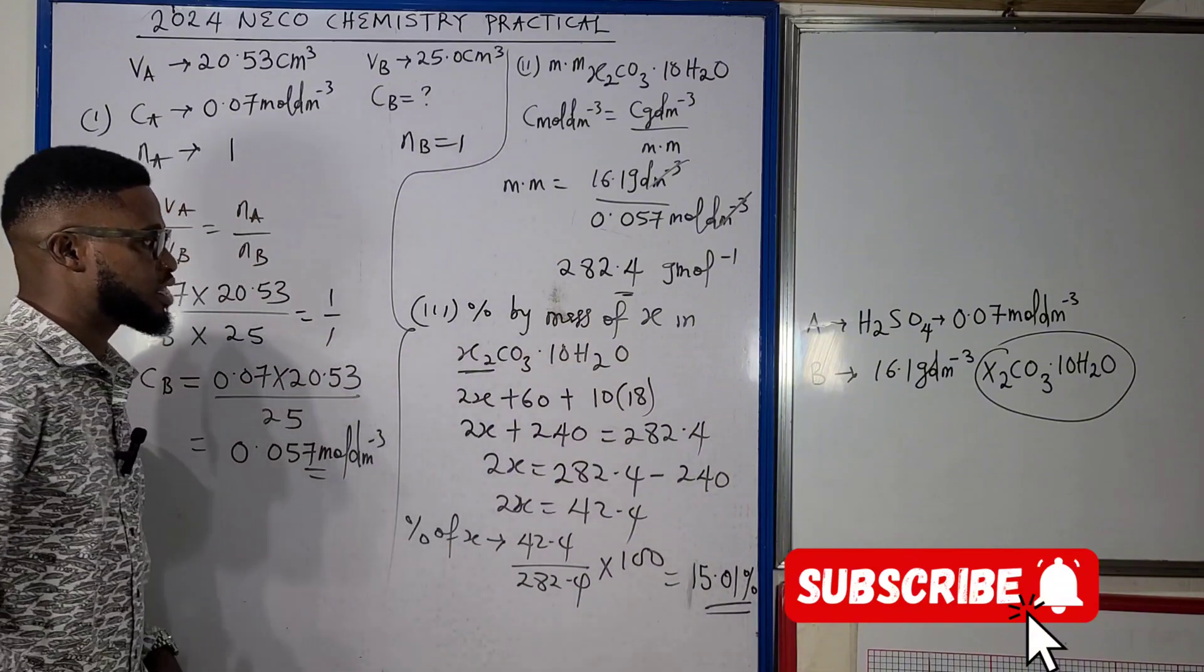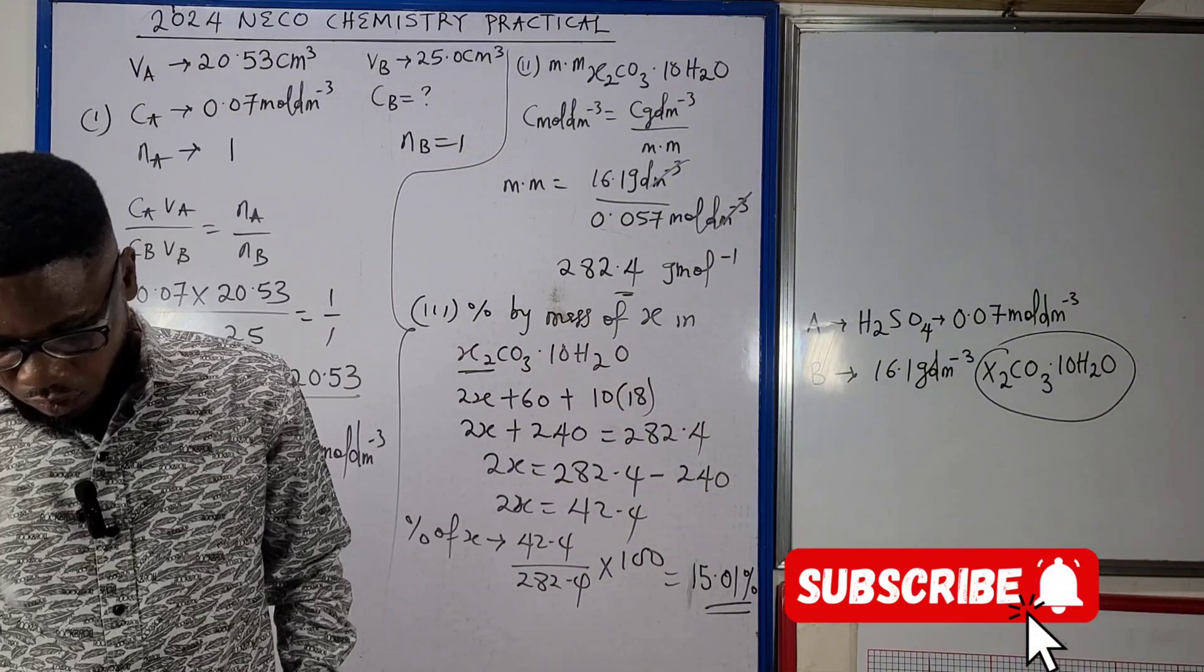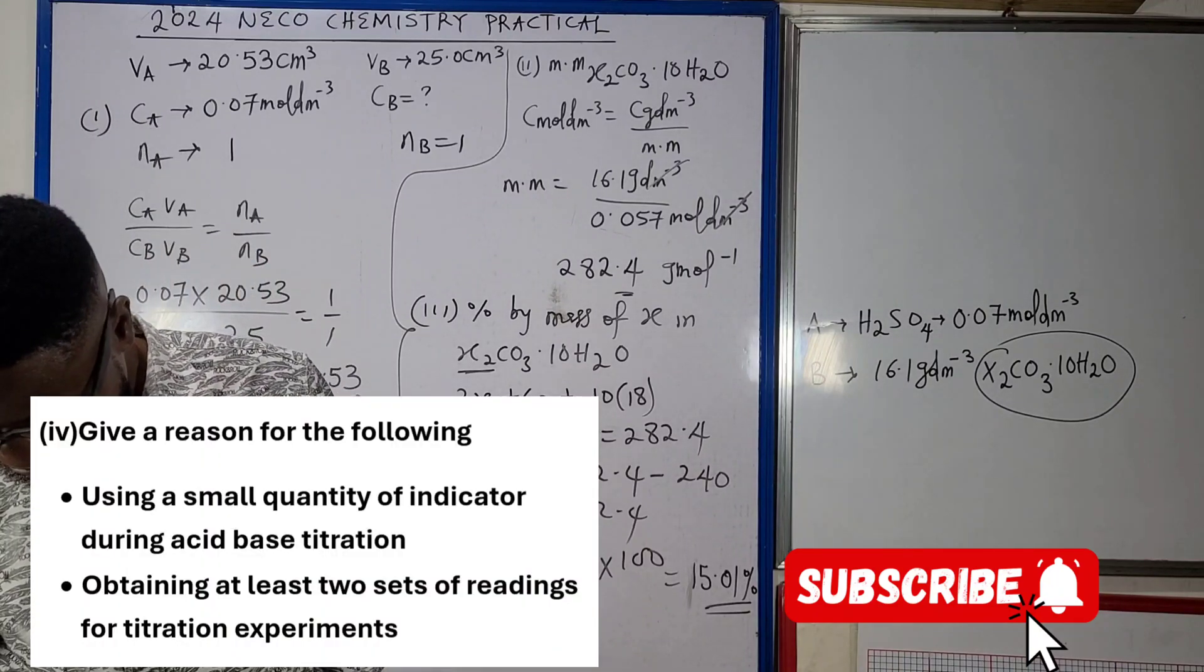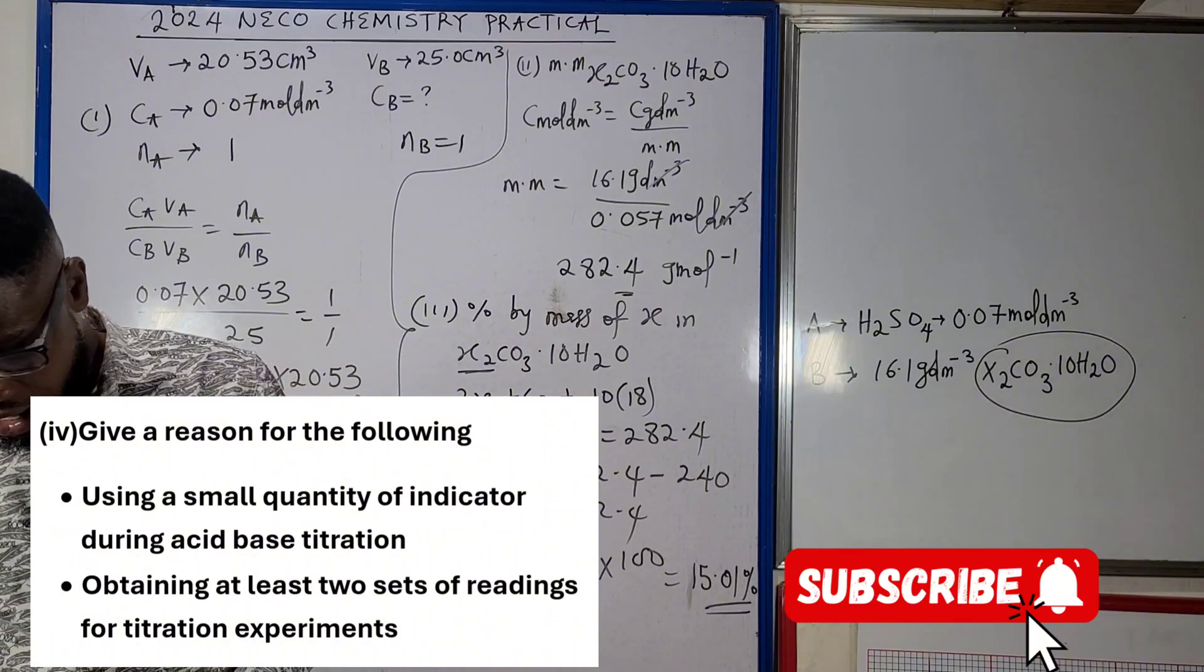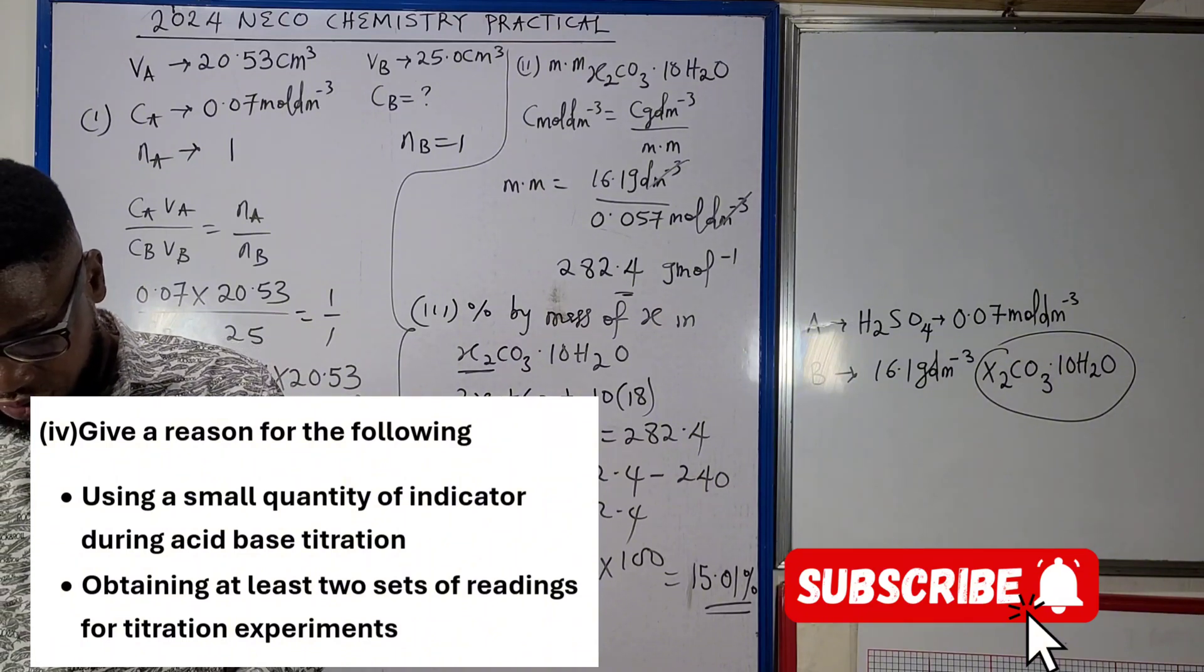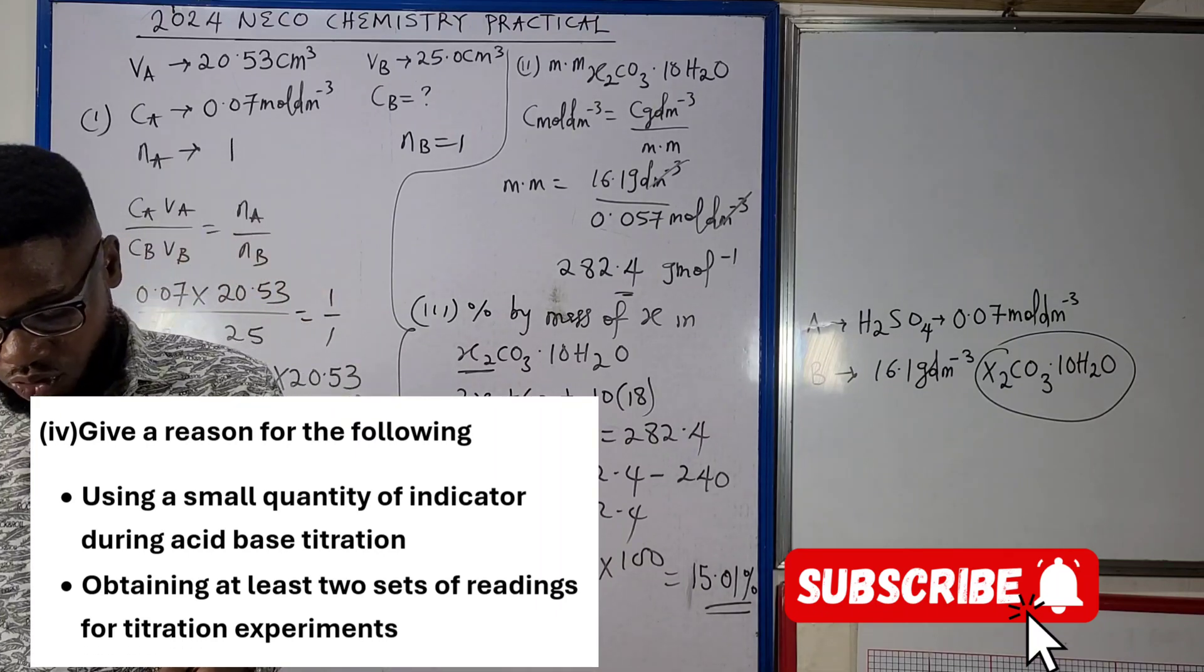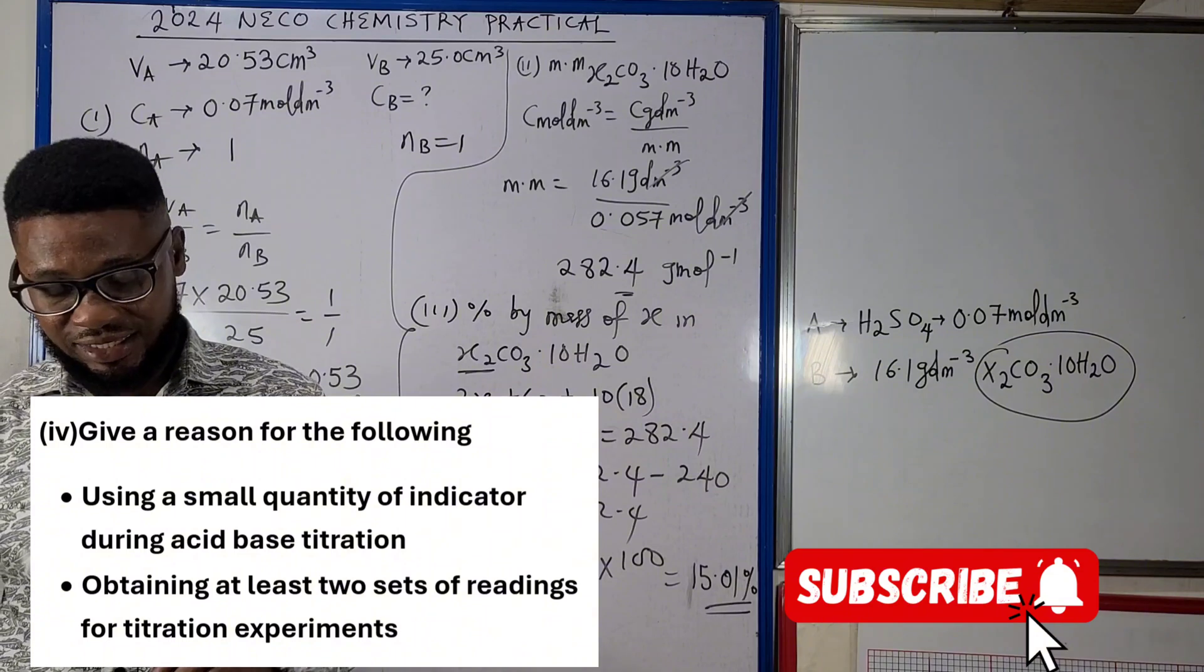In X2CO3.10H2O, and that ends question three. So moving on to question four, we were told to give a reason for the following. We're told to give a reason why we use a small quantity of indicator during acid-base titration.